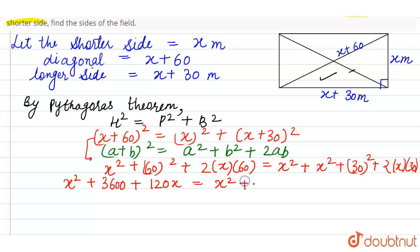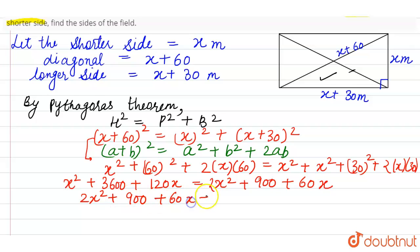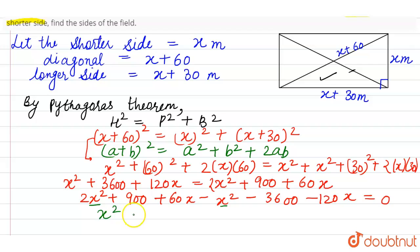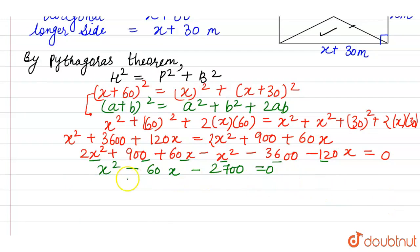So we have x² + 3600 + 120x = 2x² + 900 + 60x. Transferring all terms to the right-hand side: 2x² + 900 + 60x − x² − 3600 − 120x = 0, which simplifies to x² − 60x − 2700 = 0.